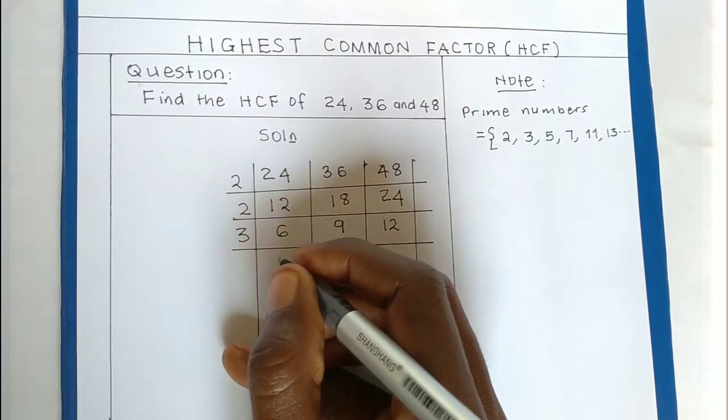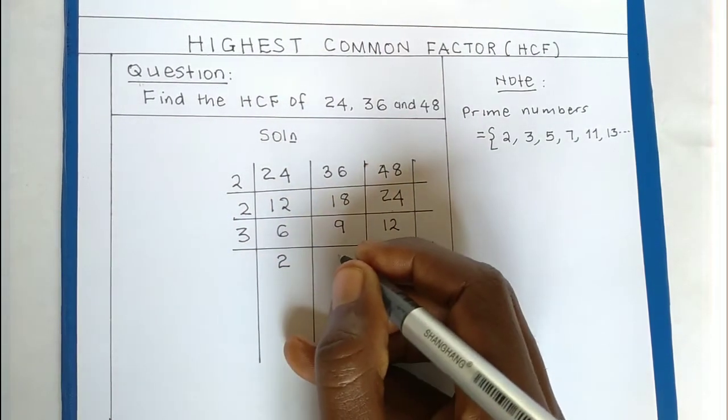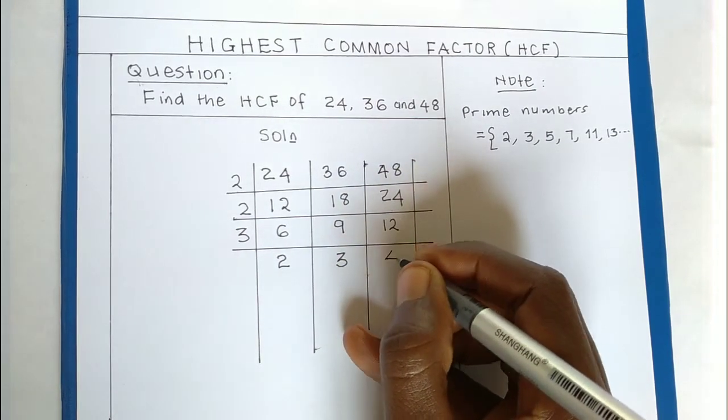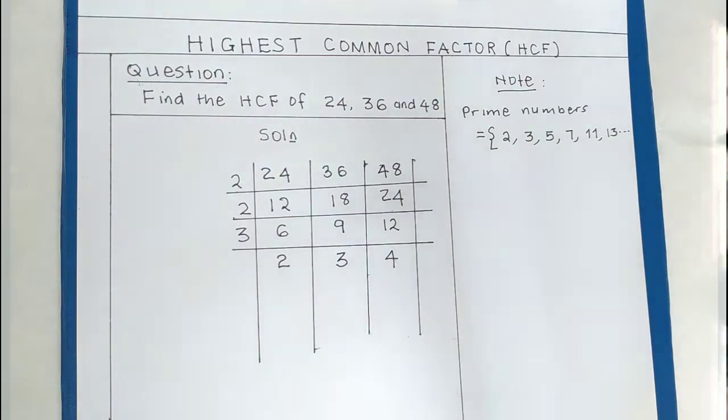6 by 3 gives 2, 9 by 3 gives 3, and 12 by 3 gives 4. When you've seen that you cannot find any prime number that 2, 3, and 4 are all divisible by, that is the end of the process.